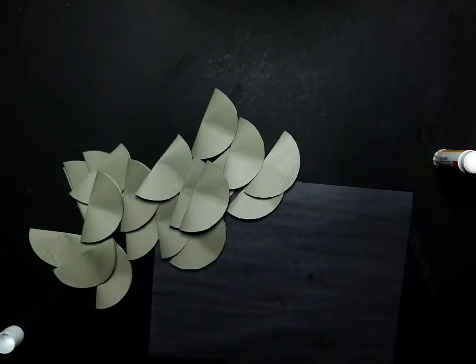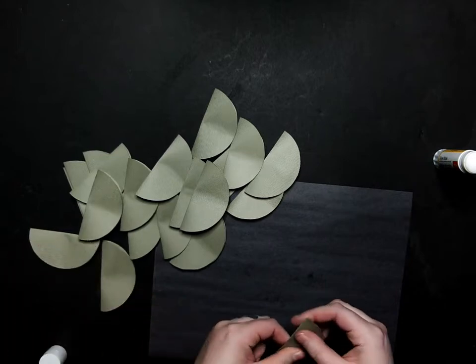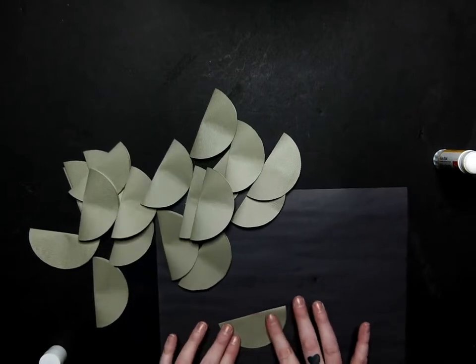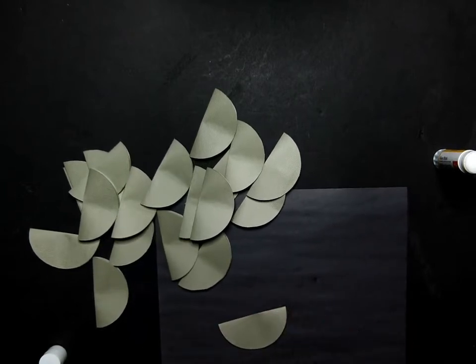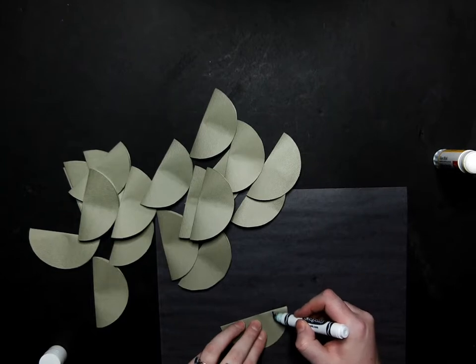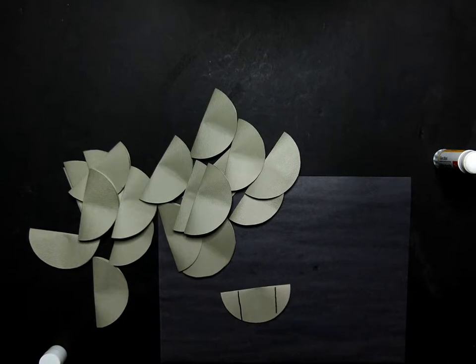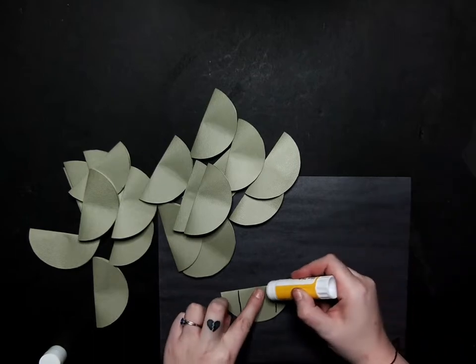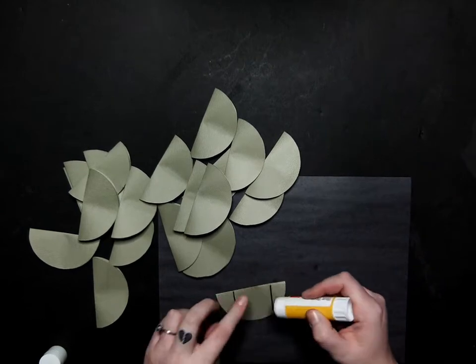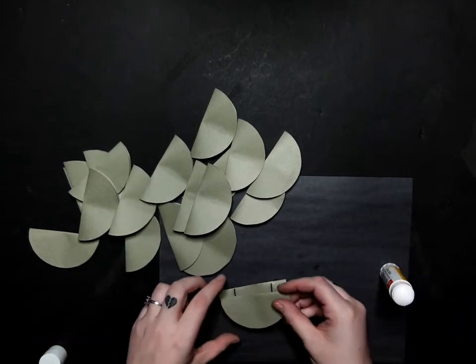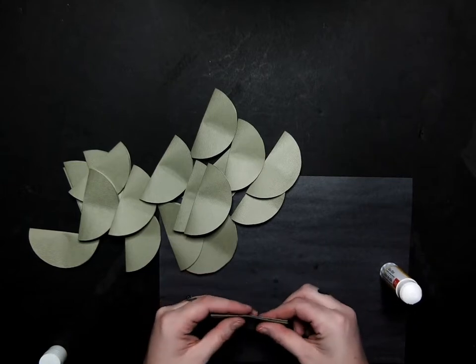Now that all of those are glued, we're going to start assembling the ball now. Just like this, we'll do that one there, and that one there. And then we will pop it on top.